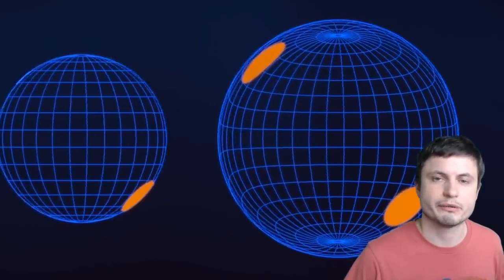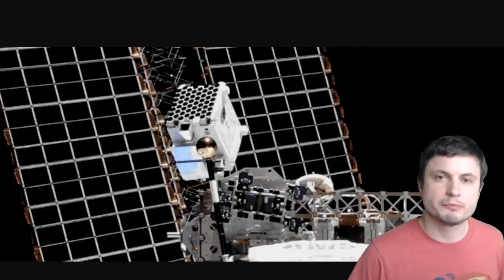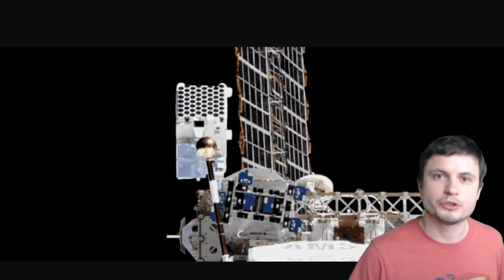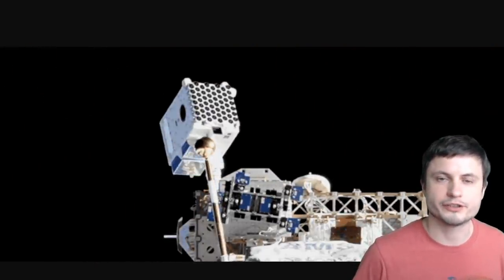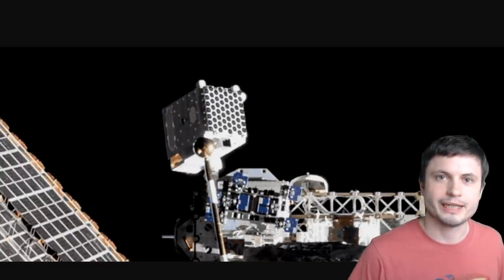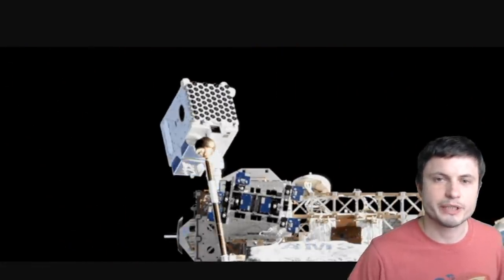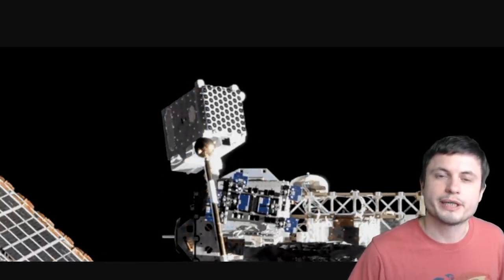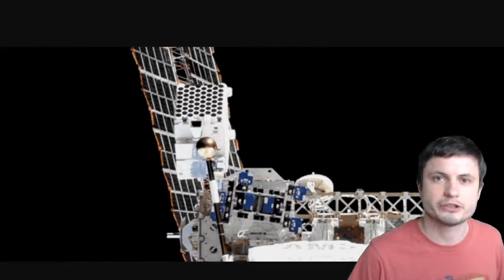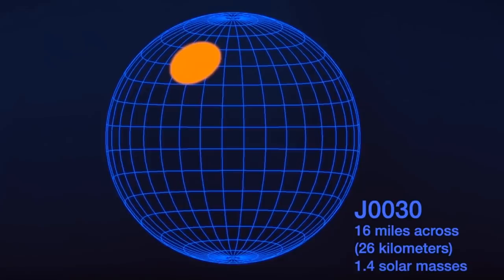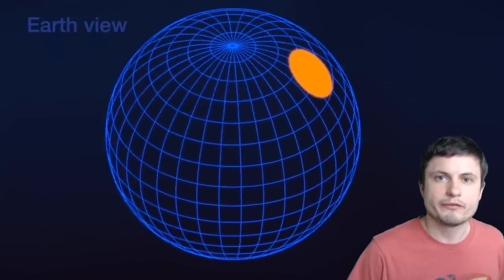However, there was this one specific pulsar that the scientists wanted to investigate using this beautiful device known as NICER. This is actually an x-ray, well I guess you can call it telescope, that looks at x-ray radiation and it's surprisingly located on the ISS, the International Space Station. And so when the scientists looked at the pulsar known as J0030, they've discovered something a little bit more unusual.